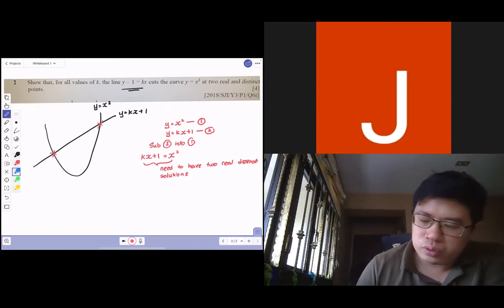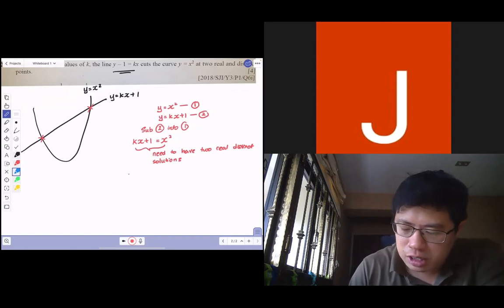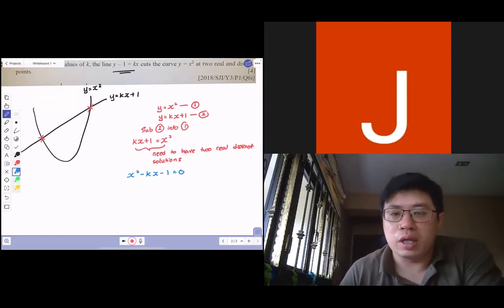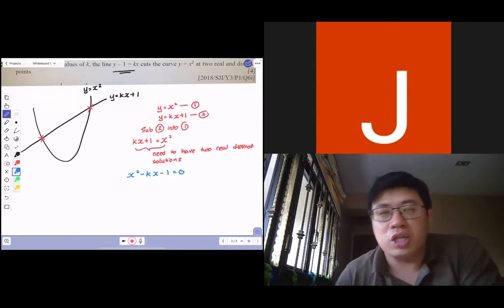So from here, what do we do next? Just make the right-hand side zero, form your quadratic equation. After you make the right-hand side zero, what do you do next? Find the discriminant. You want to show that the discriminant is positive.